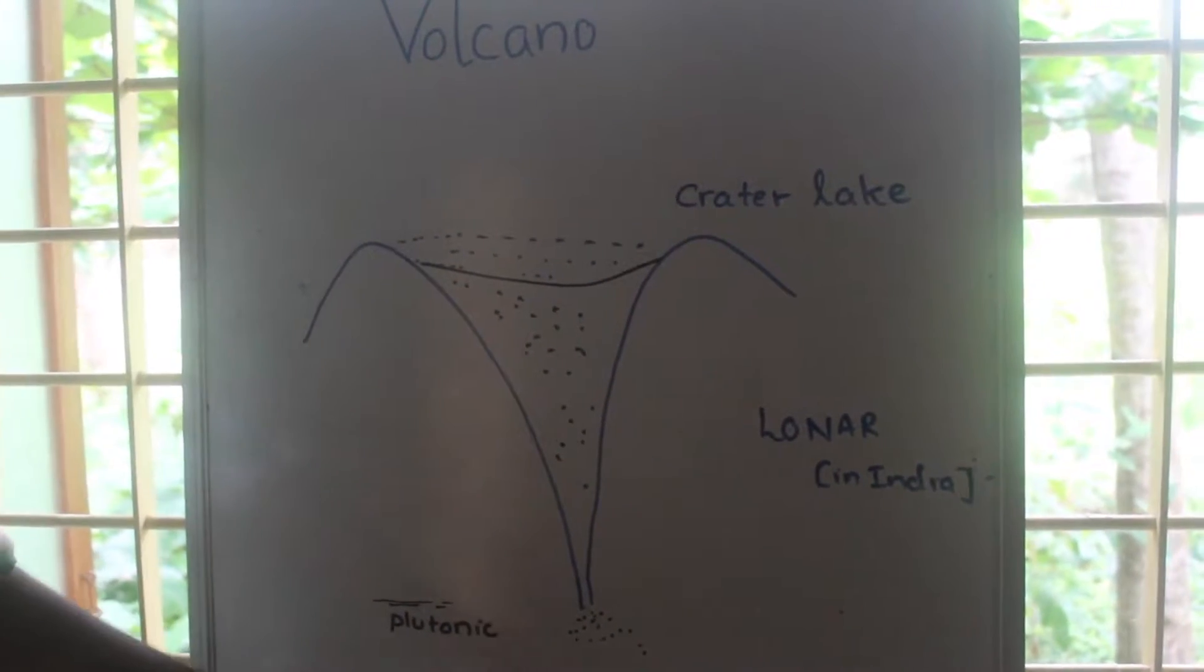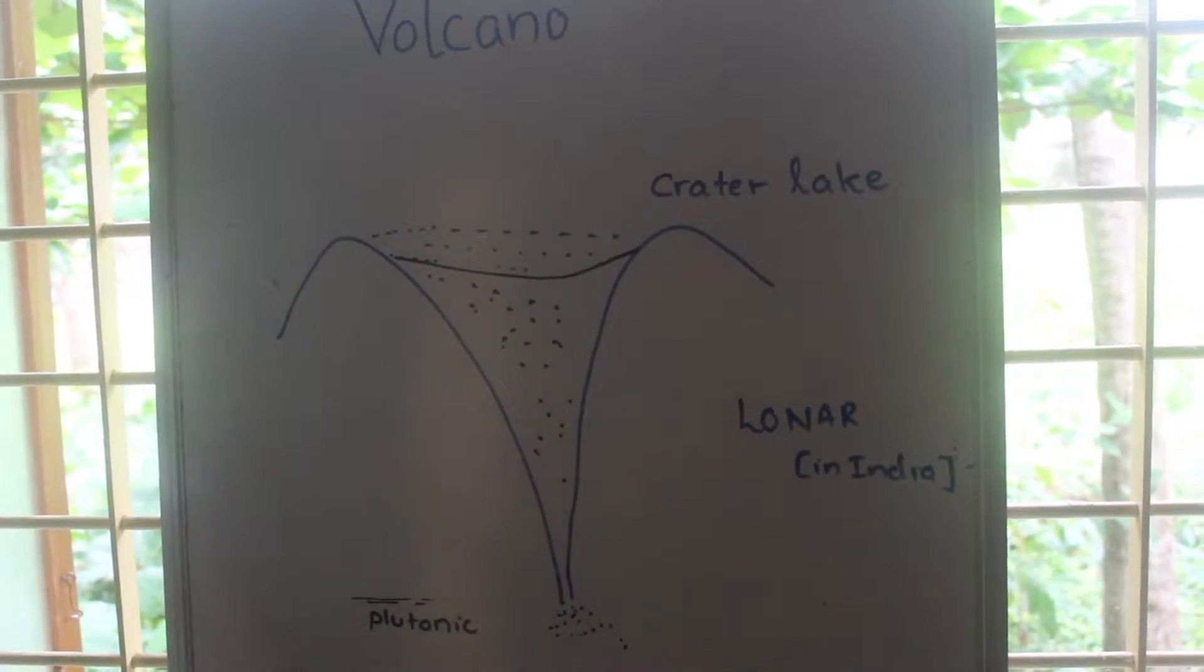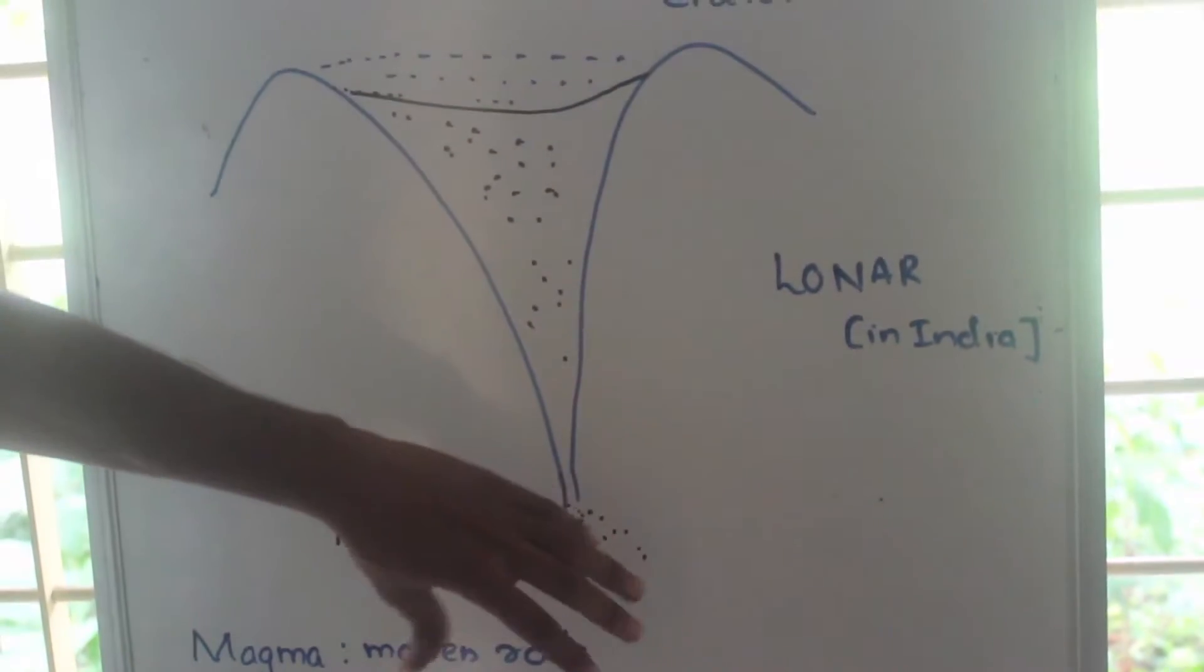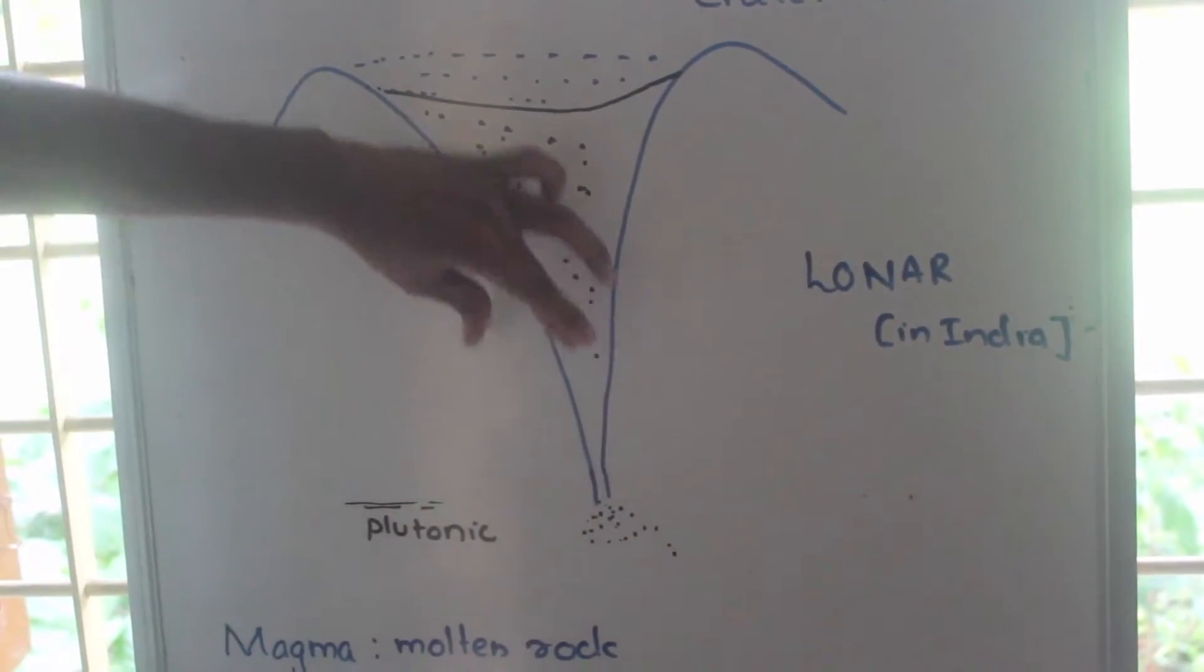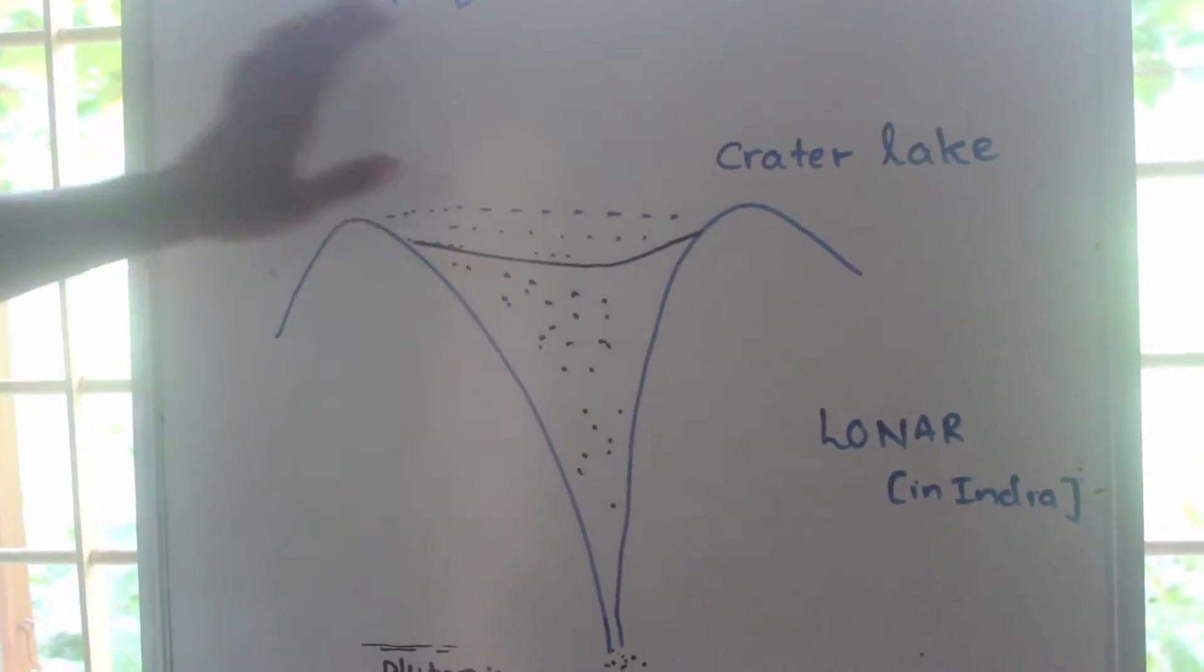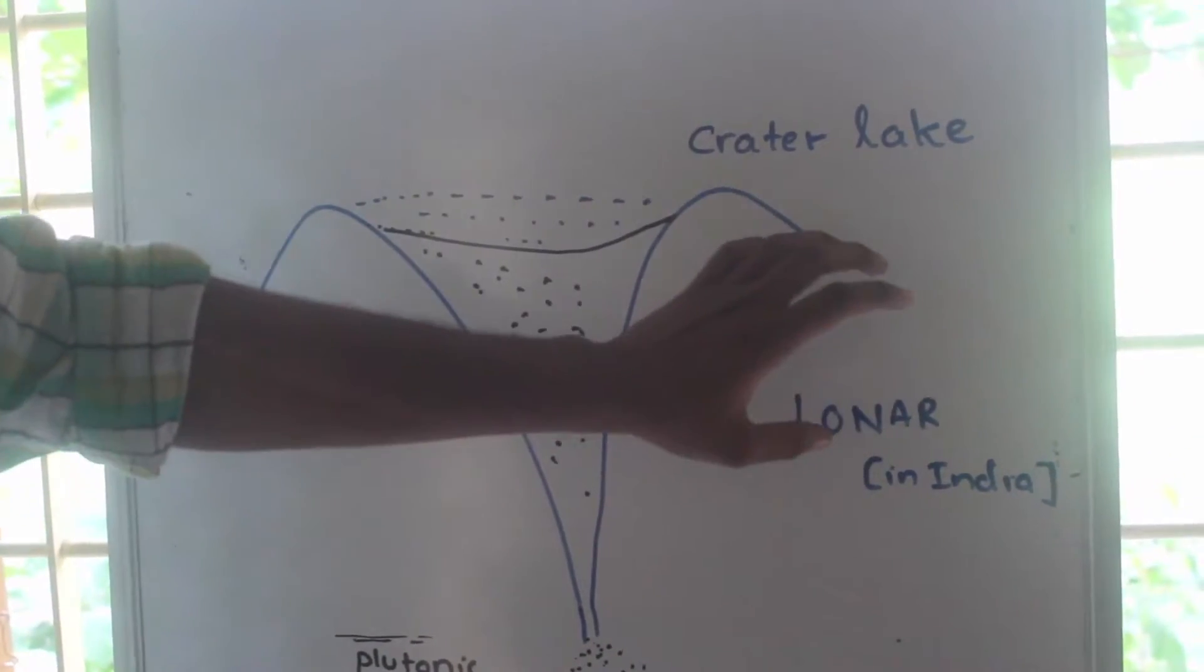Magma contains molten rock, gases, minerals, dust, ash, water, etc. This magma comes out through a hole called a vent. When it flows out, we call it lava.